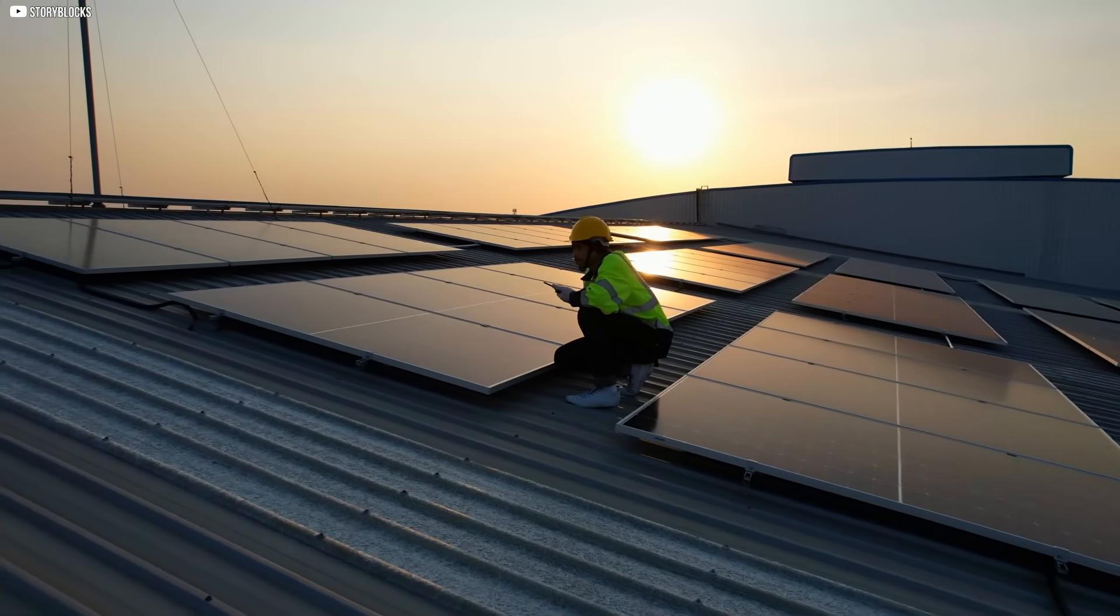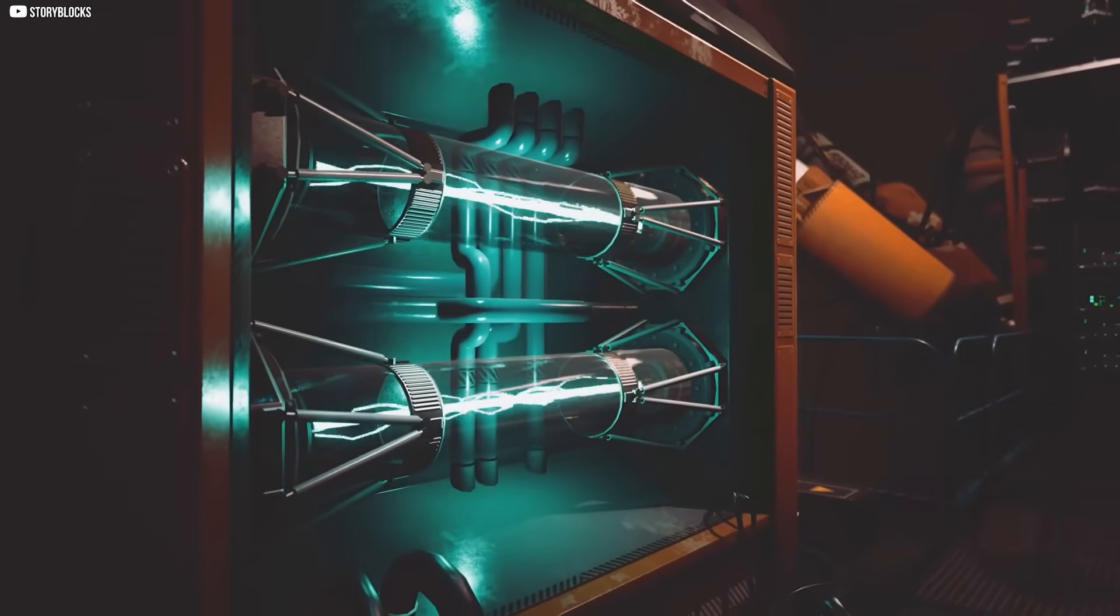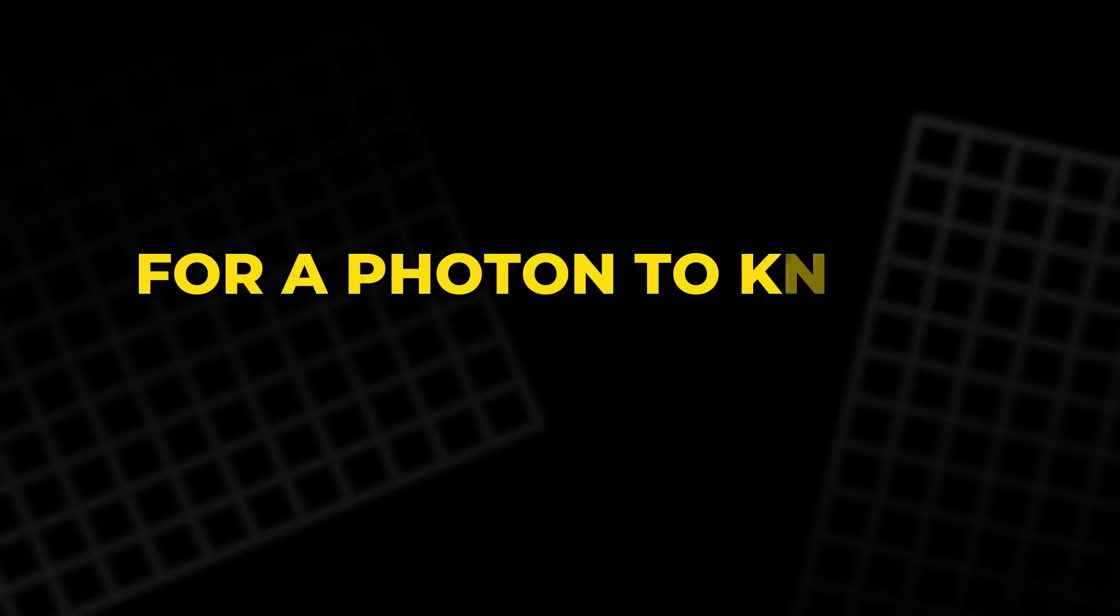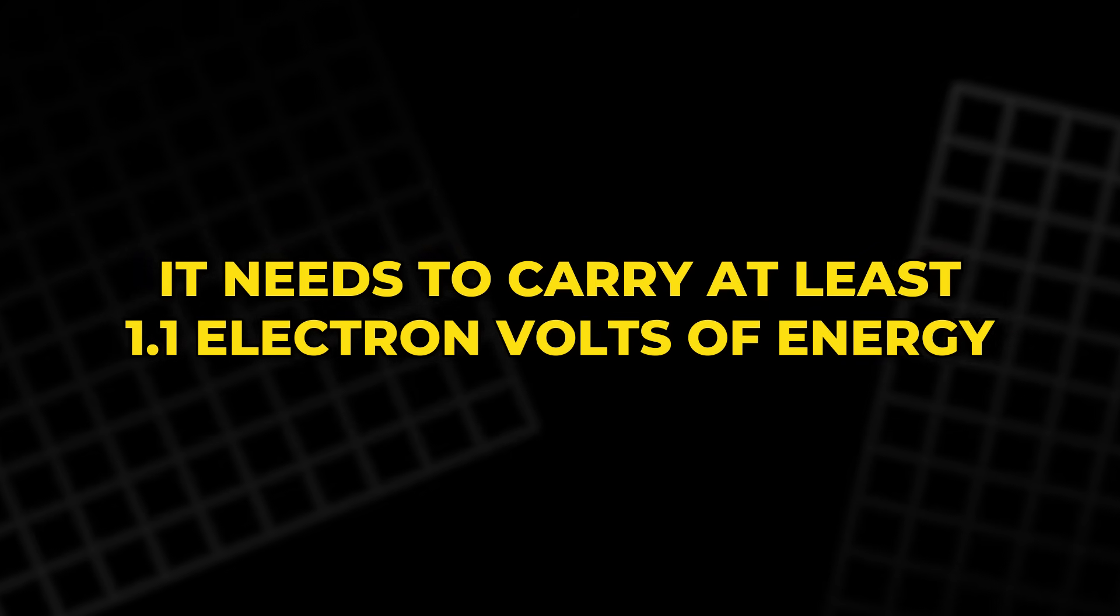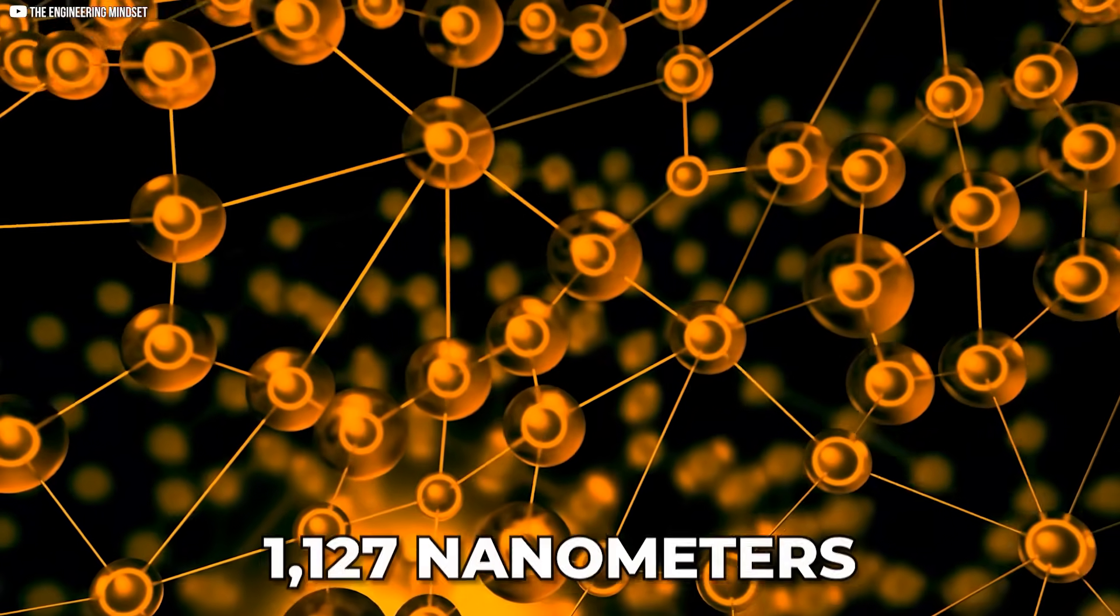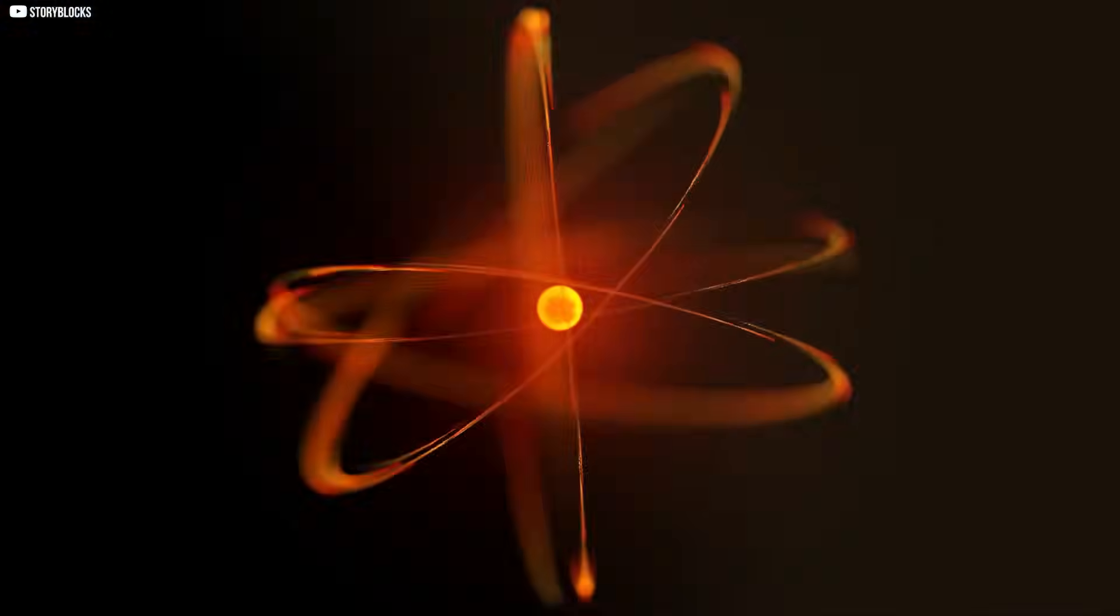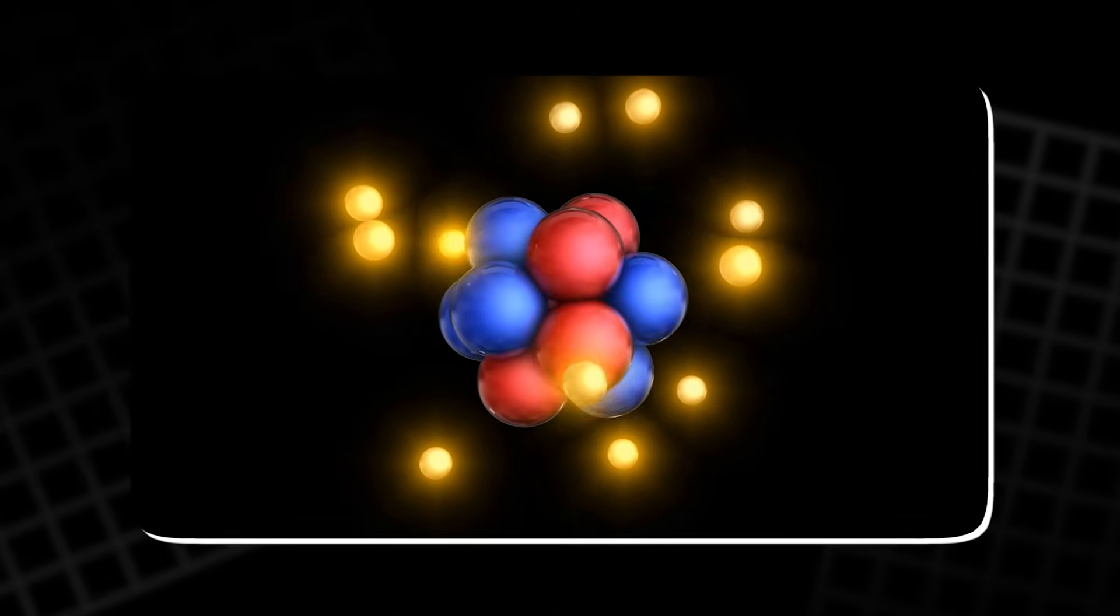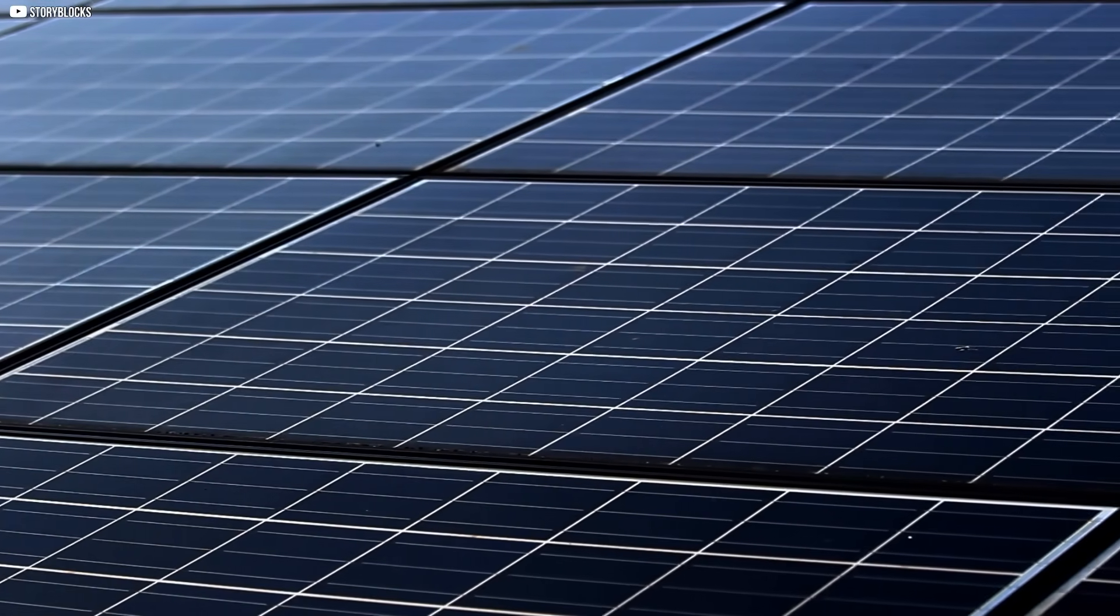Light wavelength and efficiency loss. Not all sunlight is useful for solar panels. The sun emits energy across a wide spectrum of wavelengths from high-energy ultraviolet to low-energy infrared and beyond. But silicon, the main material in most solar cells, can only absorb photons within a specific range. For a photon to knock an electron loose, it needs to carry at least 1.1 electron volts of energy. That corresponds to wavelengths up to about 1,127 nanometers, mostly covering visible light and some near-infrared. Photons with less energy simply pass through the panel without doing anything. Photons with more energy can free an electron, but the extra energy gets wasted as heat, which actually lowers the panel's efficiency as it warms up.